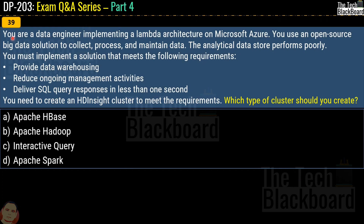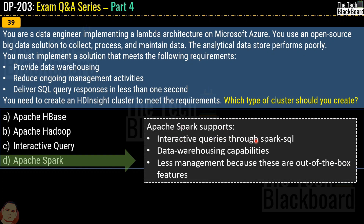Question number 39 says: you are a data engineer implementing a Lambda architecture on Microsoft Azure using an open source big data solution. The analytical data store is performing poorly. You need a solution that provides data warehousing, reduces ongoing management activities, and delivers SQL query responses in less than one second. You need to create an HDInsight cluster — which type should you create? Options are Apache HBase, Apache Hadoop, Interactive Query, or Apache Spark. The correct answer is Apache Spark, because it supports interactive queries through Spark SQL, data warehousing capabilities, and less management through out-of-the-box features.